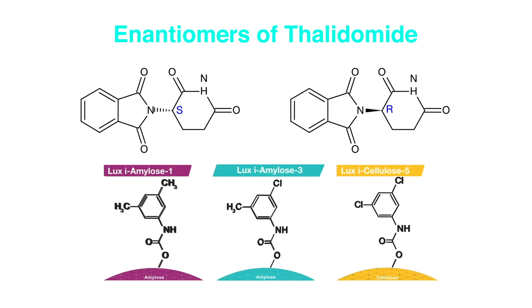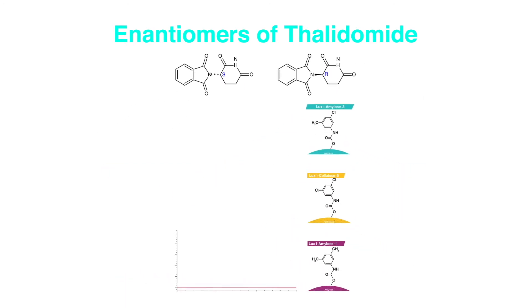In modern-day analytical science, chromatography has become the primary means to both separate and quantify enantiomers.